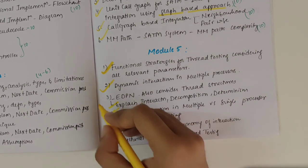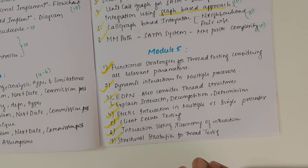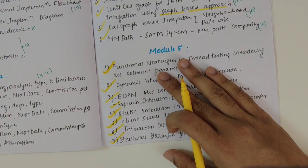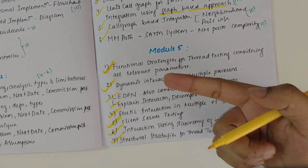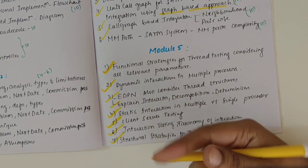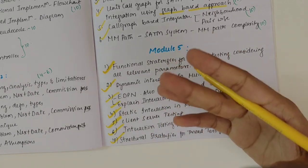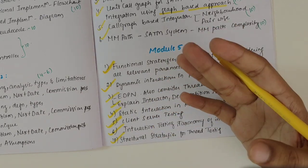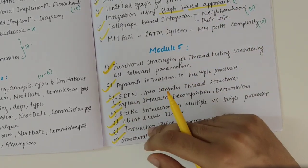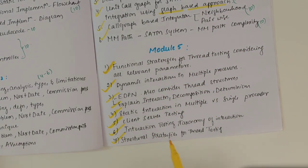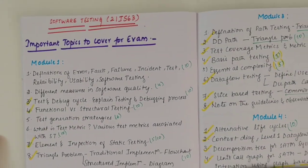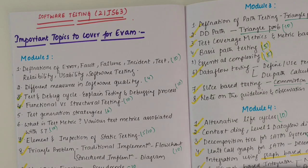Then what is interaction testing and the taxonomy of interaction — along with defining the terms of interaction, decomposition, and determinism. Then we have IDPN and the thread structure. Besides this, what are threads, requirements specification, how to find threads — structural and others. Then SATM test threads and how to derive them. What is ASF testing and examples of ASF testing. Second chapter topics include interaction testing and client-server topics. This PDF is available via the link in the description. If you have any doubts, do let me know in the comments, and stay tuned. Thank you.